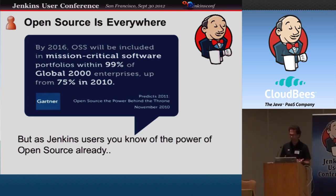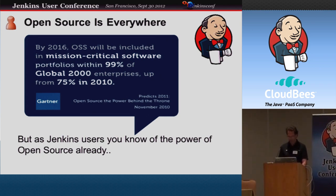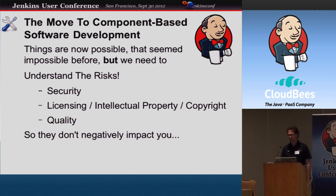Open source is everywhere. Even places like Gartner woke up to that — they predicted in 2010 that by 2016, more than 99% of global 2000 enterprises will be using open source components in their mission-critical software. Just look at the power of Jenkins and you know why. This component-based software development approach is basically what's happening de facto, and that makes things possible that wouldn't have been possible a long time ago.